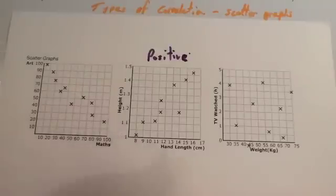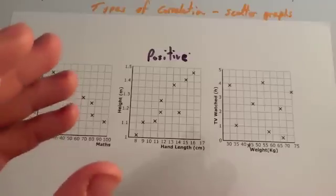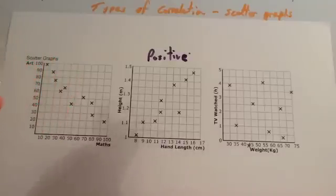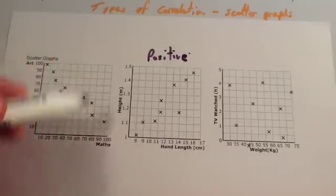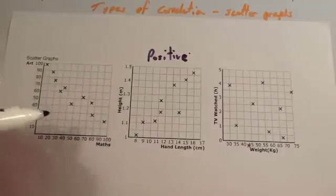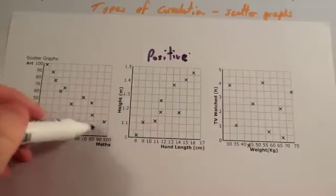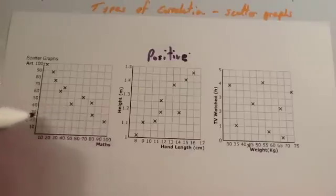The definition of a negative correlation is, as one value increases, or one variable increases, the other one decreases. As you can see on this scatter graph, the one on the left, this one has got a negative correlation. As the Math scores are quite high, the Art scores are quite low.